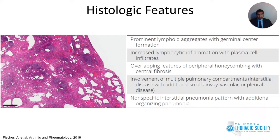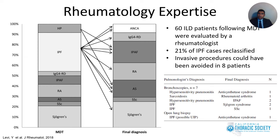It is very important to have a rheumatologist involved in the evaluation of patients with ILD. In one study, 60 ILD patients were evaluated by a multidisciplinary team prior to rheumatologist referral. On subsequent evaluation by the rheumatologist, 21% of patients diagnosed with IPF by pulmonologists were reclassified, and in 8 patients, procedures could have been avoided by having a rheumatologist involved early on.